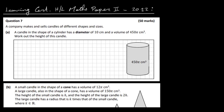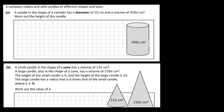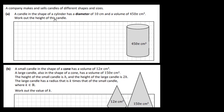We're going to have a look at the Leaving Cert Higher Level Maths Paper 2, 2022, question 7. This is the first of the longer questions. A company makes and sells candles of different shapes and sizes. A candle in the shape of a cylinder has diameter 10 cm and volume 450π cm³. Work out the height of the candle.